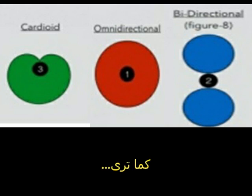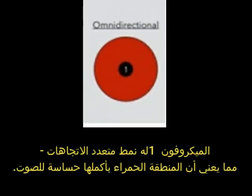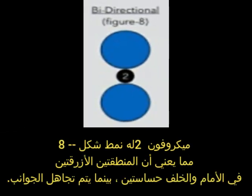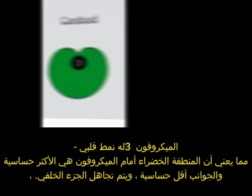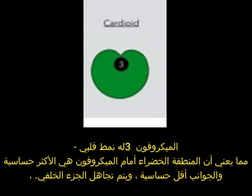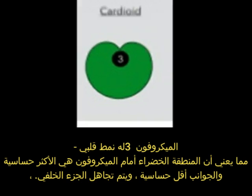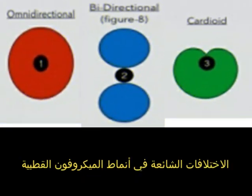Here's a diagram showing how they look. Mic one has an omnidirectional pattern, meaning the entire red area is equally sensitive to sound. Mic two has a figure eight pattern, meaning the two blue areas on the front and back are sensitive while the sides are ignored. Mic three has a cardioid pattern, meaning the green area in front of the mic is most sensitive, the sides are less sensitive, and the rear is ignored.